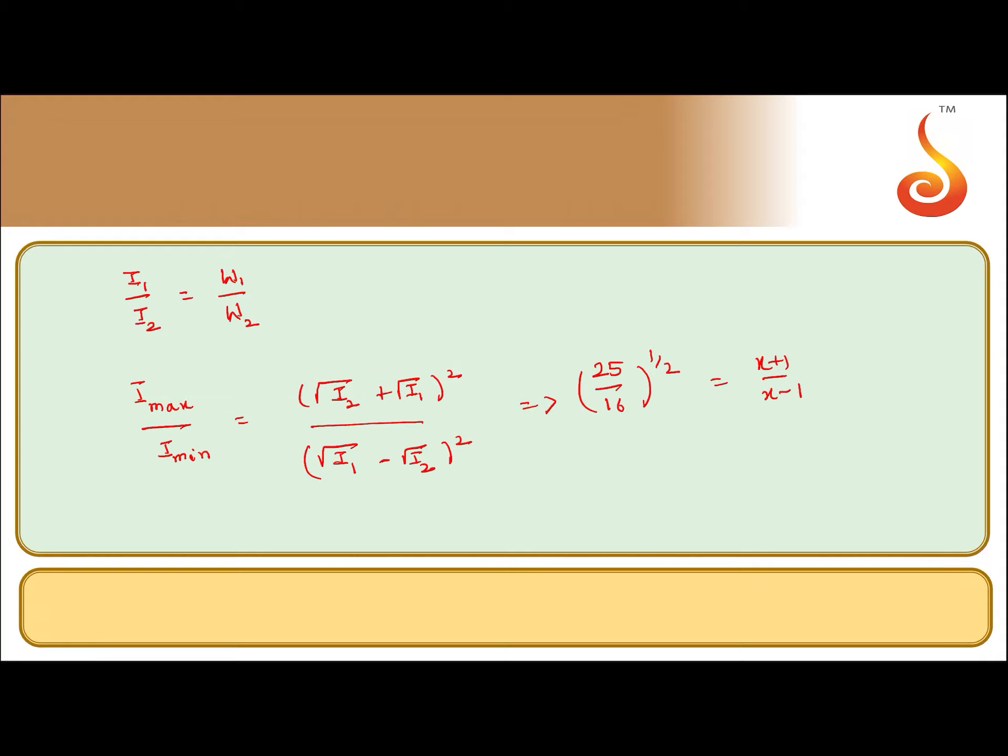Now if we solve this we will find out that i1 by i2 is equal to 81 by 1. So this implies that the ratio between the slit width is going to be 81 by 1.